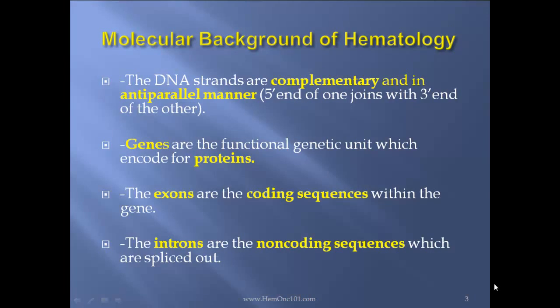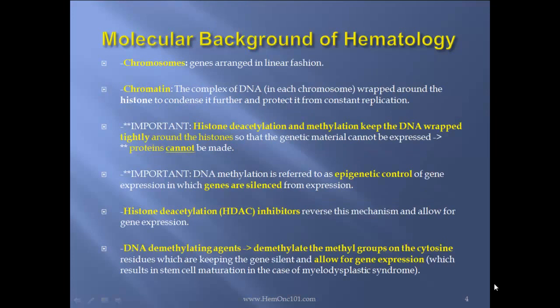The DNA strands are complementary in an anti-parallel manner; the 5' end of one joins with the 3' end of the other. Genes are the functional genetic unit which encode for proteins. The exons are the coding sequences within the gene, and the introns are the non-coding sequences which are spliced out. Chromosomes are genes arranged in linear fashion. Chromatin is a complex of DNA in each chromosome wrapped around the histone to condense it further and protect it from constant replication.